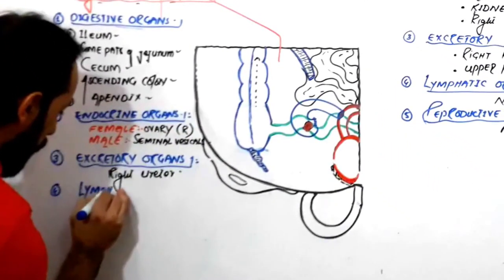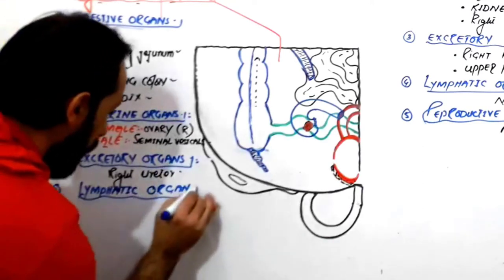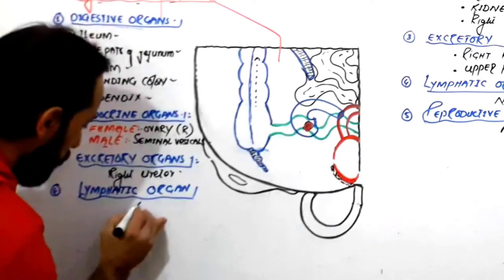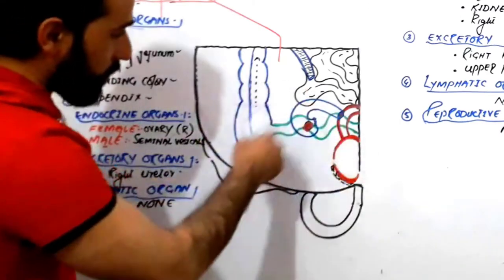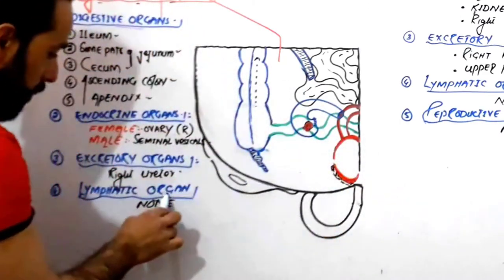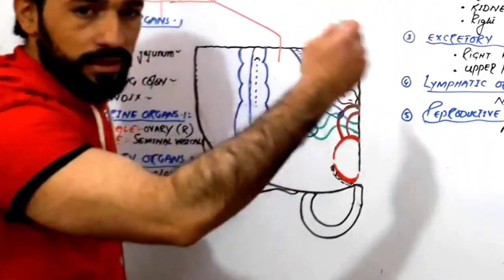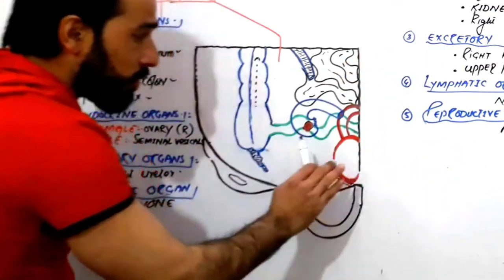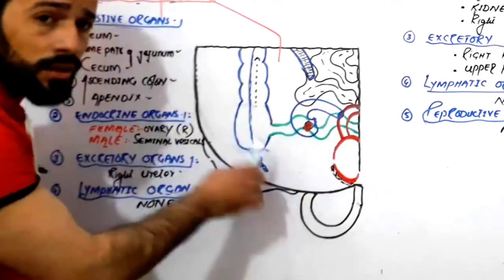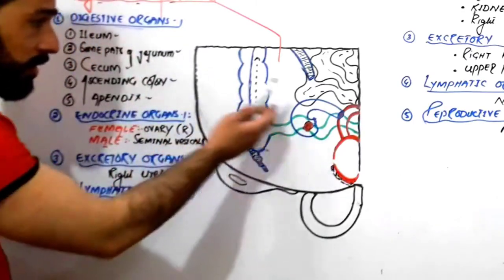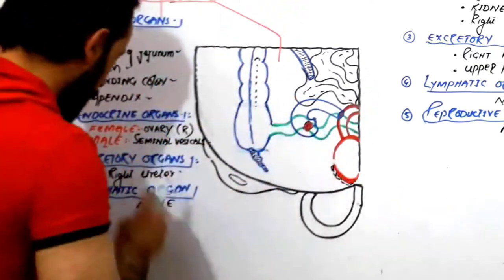The fourth group: are there any lymphatic organs in the right lower quadrant? None. No lymphatic organ is present in the right lower quadrant of the abdominal cavity. The abdominal lymphatic organ is the spleen, which I will discuss later. There are many lymph nodes and lymph tissues, but no lymphatic organ here — the spleen is located in the left upper quadrant.